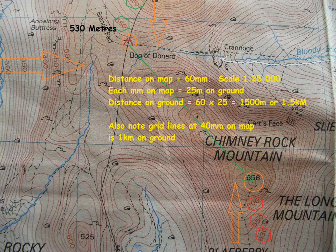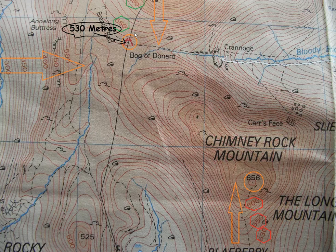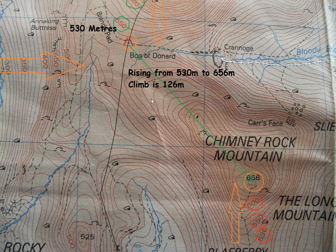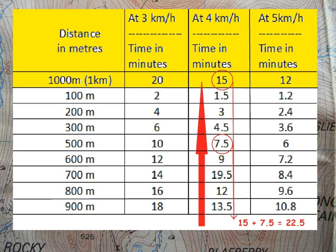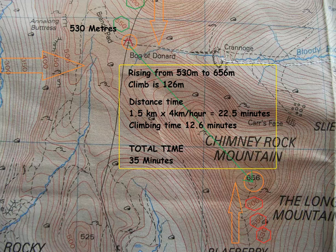So now we have half of the elements that we need to calculate the time. We also need to know how much height we are going to gain. We find that the Bog of Donard is at 530 metres, determined from the contour lines, and the height of Chimney Rock Mountain is given as 656 metres. So the difference in rising is 126 metres. Going back to our chart, 1,500 metres at 4km per hour takes 15 minutes plus 7.5 minutes, giving 22.5 minutes for the distance time. Adding the height time of 12.6 minutes for the 126 metre climb gives a total time of 35 minutes for the journey.